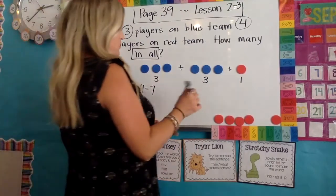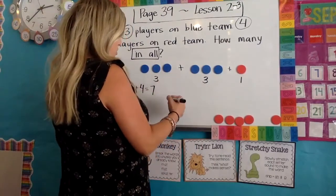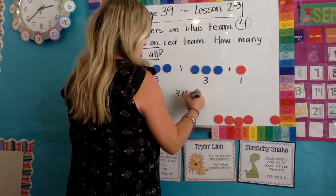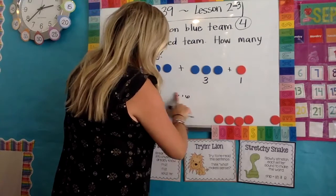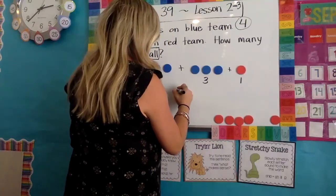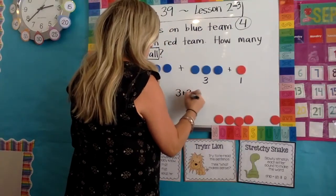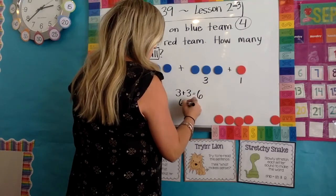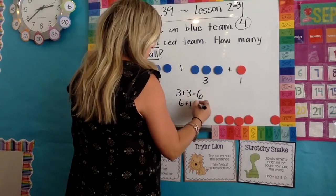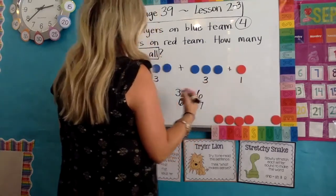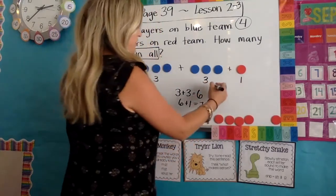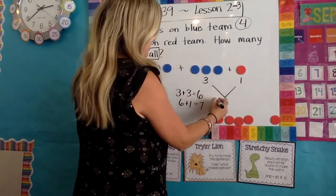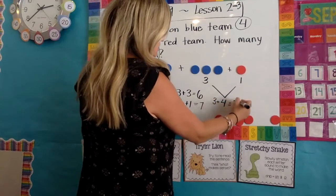So three plus four equals seven. You could also do it a different way. You could say, I know my doubles facts and I know that three plus three equals six. And then six plus one more is seven. You could also say three and one makes four — don't forget about that three — so three plus four equals seven.